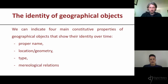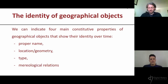An object can change its proper name but still keeps its identity. There are dozens of examples when a settlement changes its name but is still the same settlement. There are many doubtful examples, like Byzantium, Constantinople, and Istanbul. Also, a settlement might change its location or geometry but we still perceive it as the same settlement.